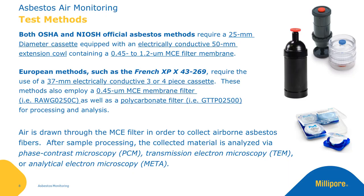These methods also employ a 0.45 micron MCE membrane filter, as well as a polycarbonate filter for processing and analysis. In each of these methods, air is drawn through the MCE filter in order to collect airborne asbestos fibers on its surface. After sample processing, the collected materials are analyzed via either phase contrast microscopy, transmission electron microscopy, or analytical electron microscopy.